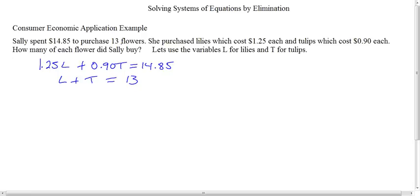She purchased lilies, which cost $1.25 each, and tulips, which cost $0.90 each. So how many of each flower did she buy?